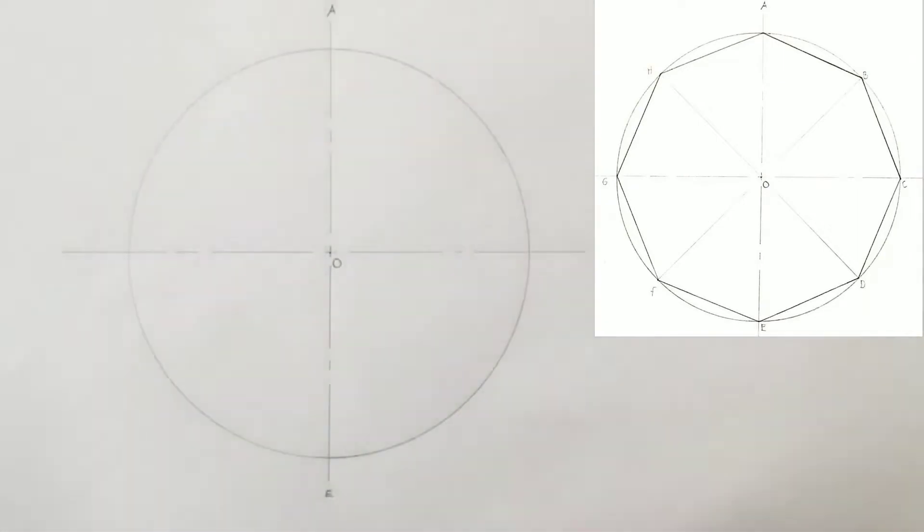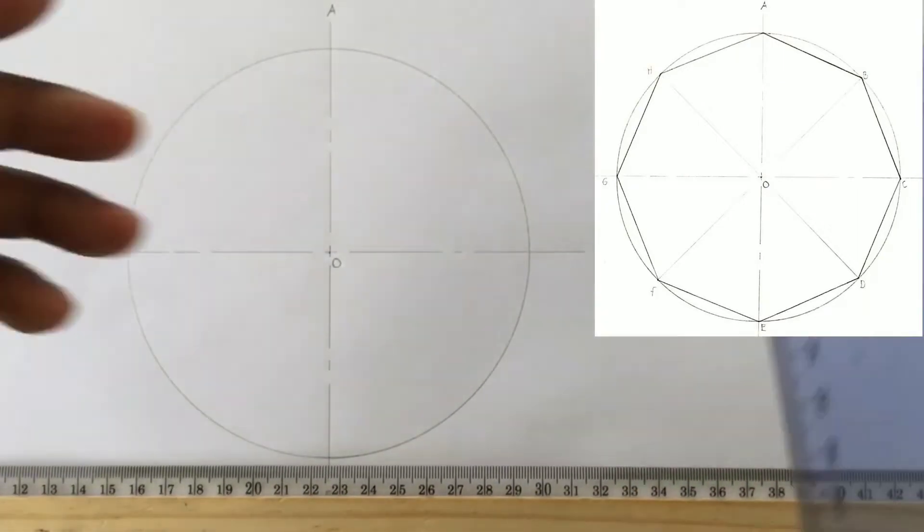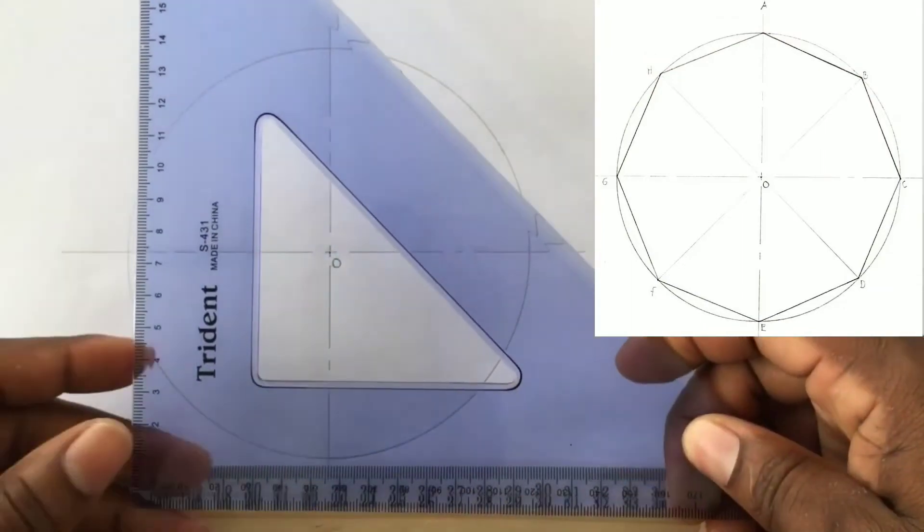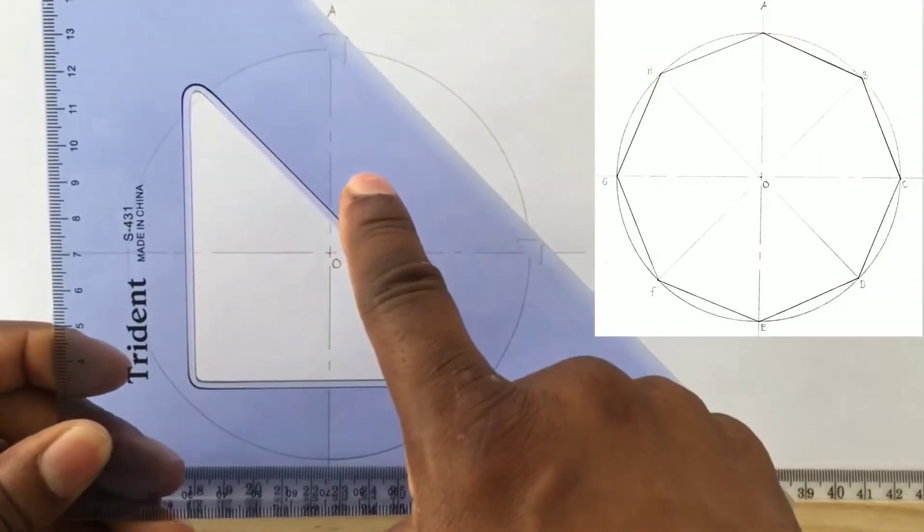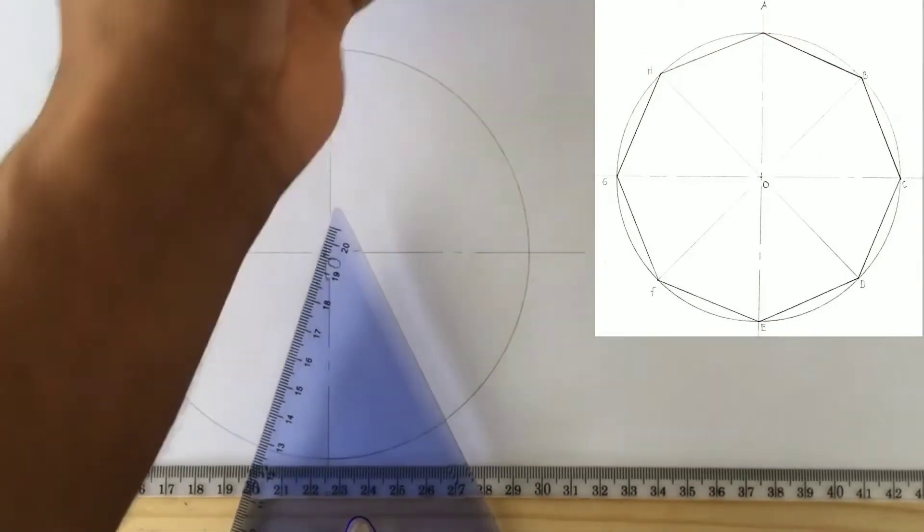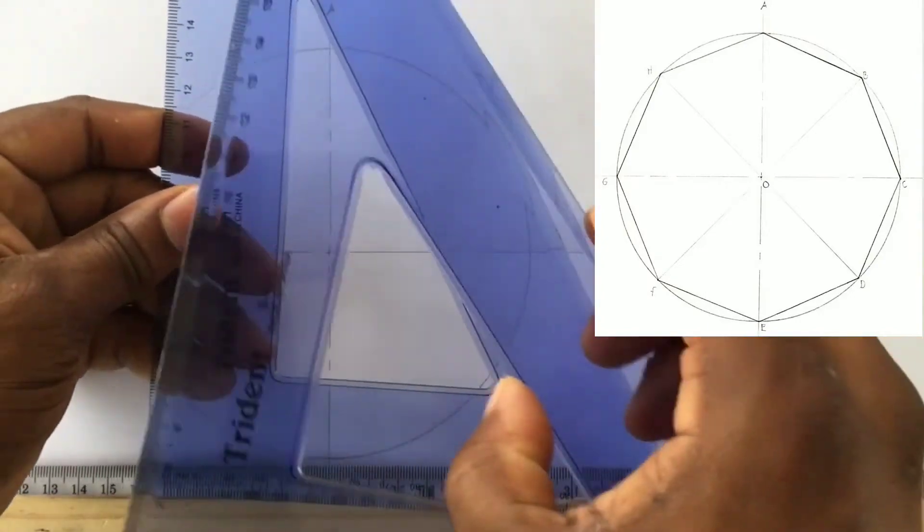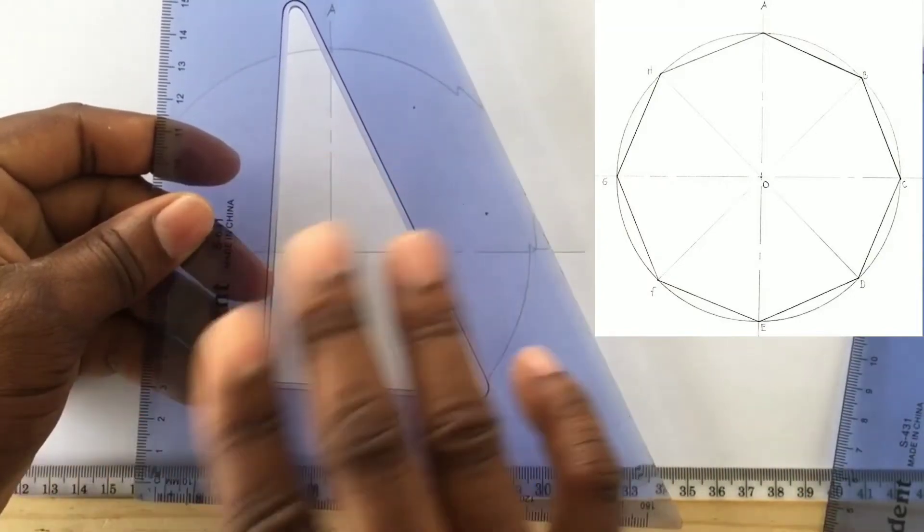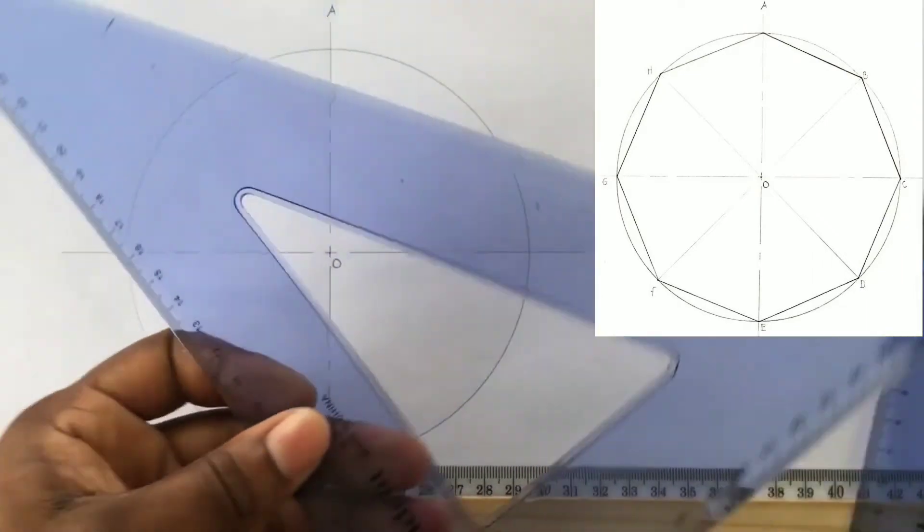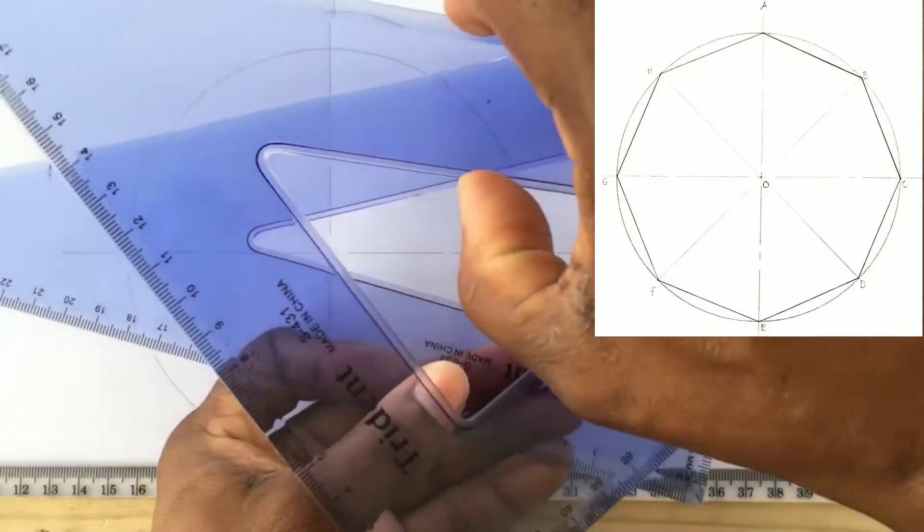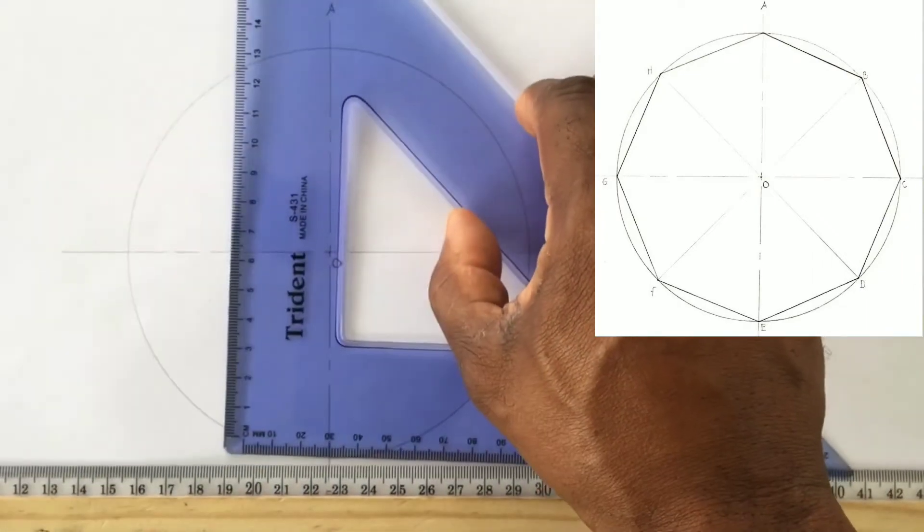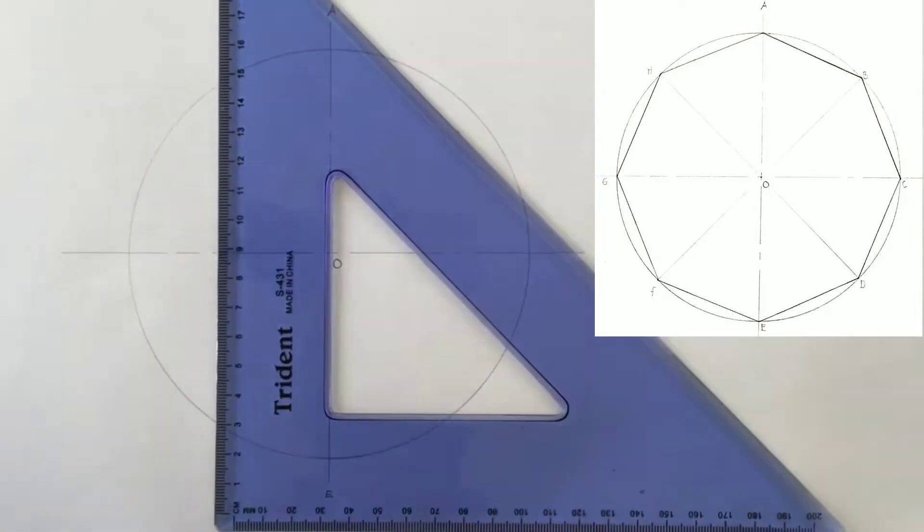We will now use our 45 degree set square along with our T square to draw lines through the center of the circle to touch the circumference of the circle. Do not use the 60 set square. Ensure that you use this 45 degree set square.